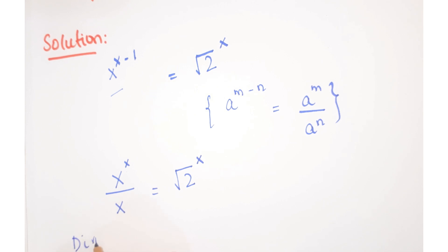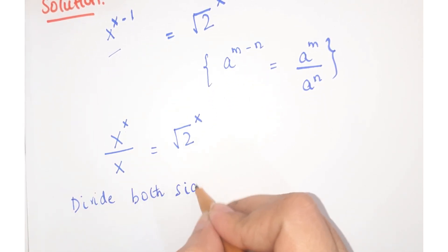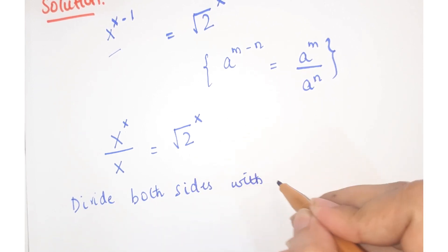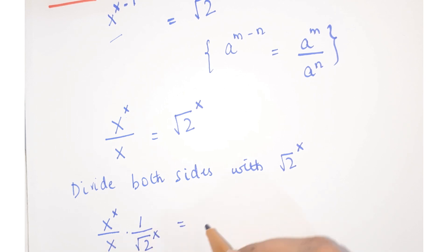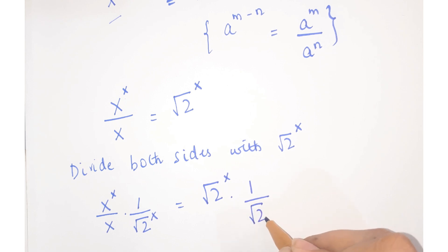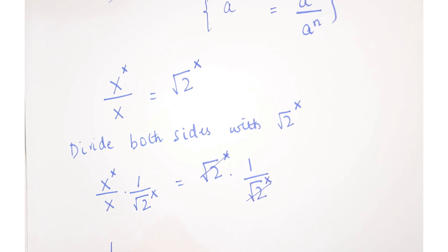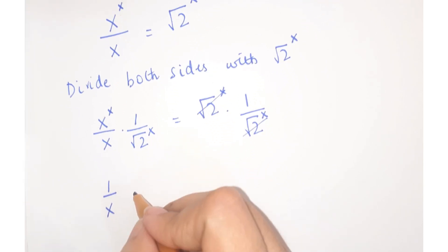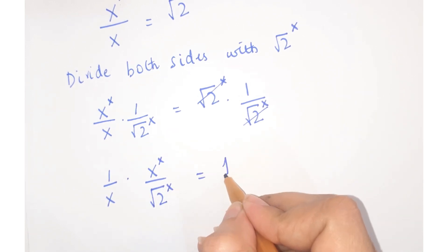Now we are going to divide both sides by square root of 2 to the power x. So we will get x to the power x divided by square root of 2 to the power x. This term gets cancelled, and here you can write this as 1 upon x into x to the power x upon square root of 2 to the power x is equal to 1.